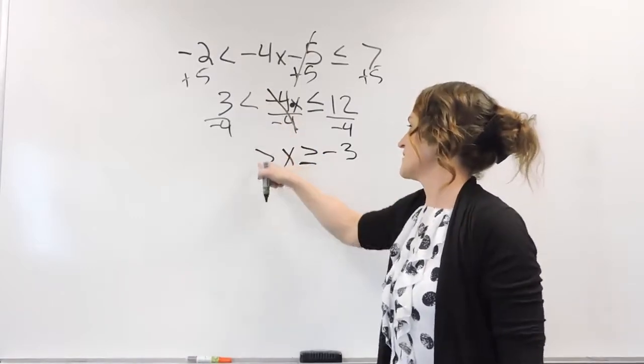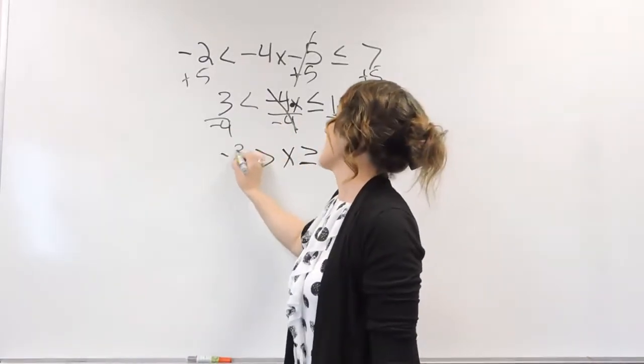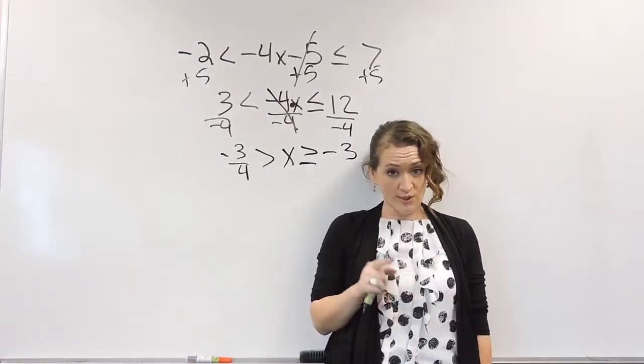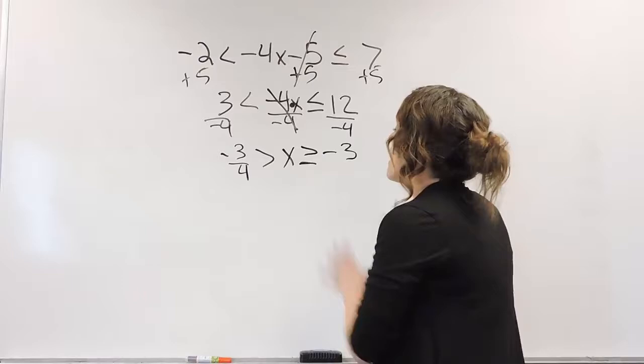This over here, I need to flip this symbol around, and I have a negative 3 fourths. Remember, you only flip the symbol when you multiply or divide by a negative. Otherwise, we do have this solve for x.